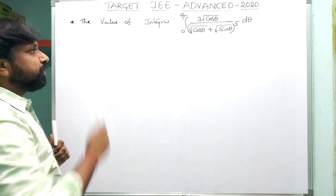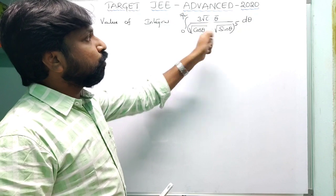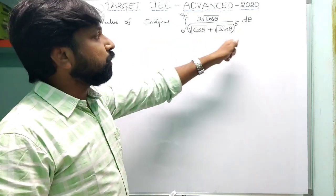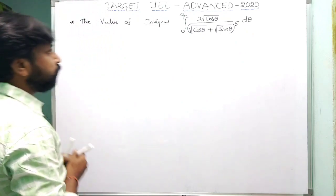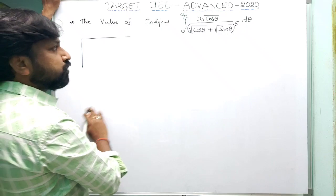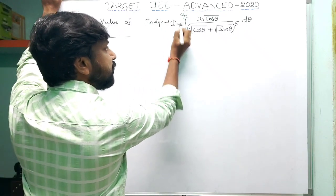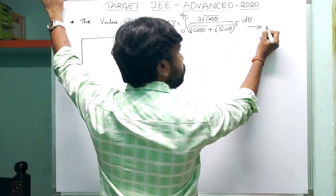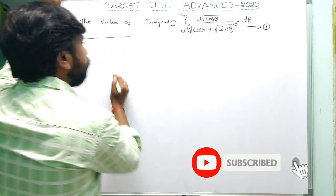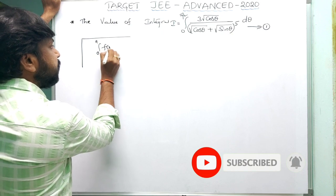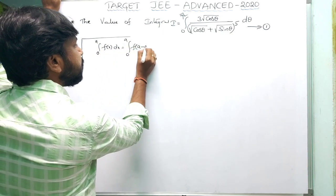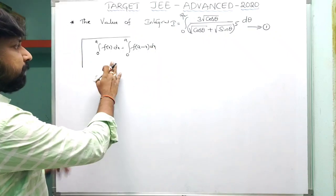Question number one: find the value of the integral from 0 to π/2 of (∛cosθ) / (∛cosθ + ∛sinθ)⁵ dθ. To evaluate this, let the given integral be called I (equation 1). We apply the formula: integral from 0 to a of f(x)dx equals integral from 0 to a of f(a−x)dx.